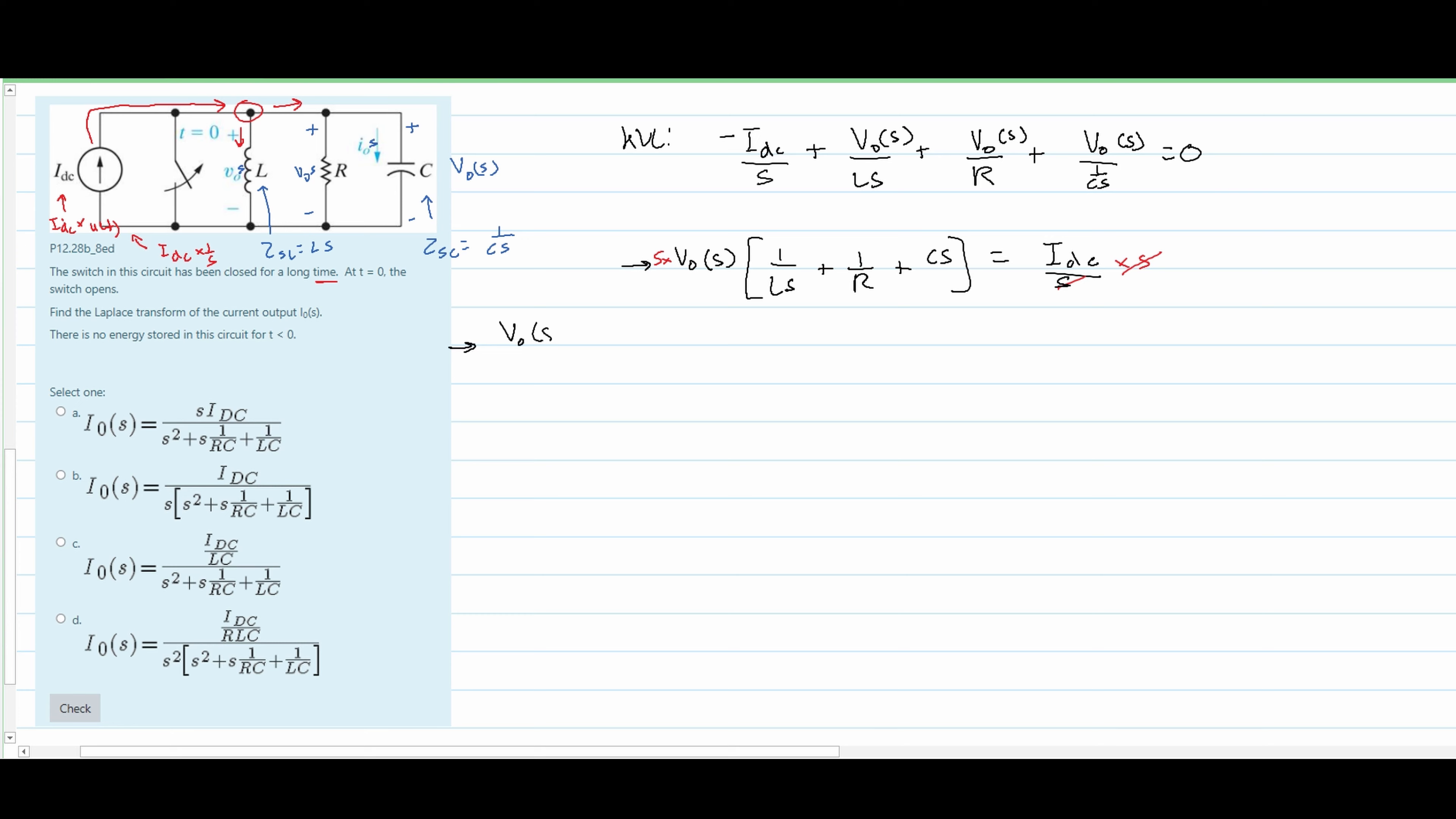Factoring this in on the left side, we're going to get V0(s), and then in brackets we're going to have 1 over L plus s divided by R plus c s squared. And this is all equal to IDC. If we can further combine this together, we know that we are going to have V0(s), and then we're just going to make all the denominators the same.